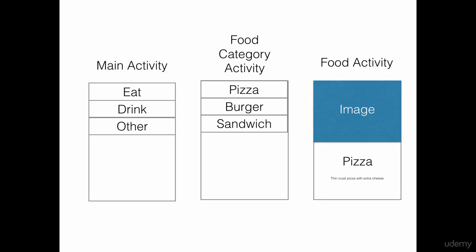This is what a list view actually looks like. This is a brief overview of the application which we are going to be building in this section. On the extreme left, this is what our application is going to look like. It's going to have three activities as shown on the screen. The main activity in the first part is going to contain three items in the list: eat, drink, and other.